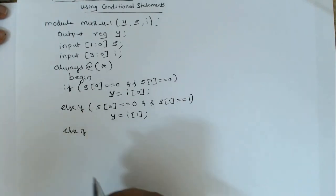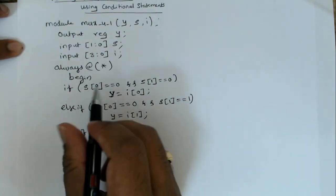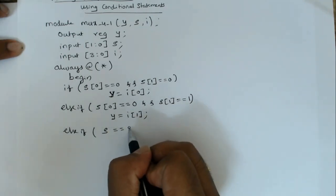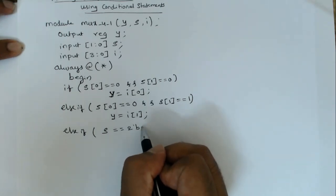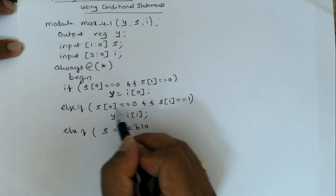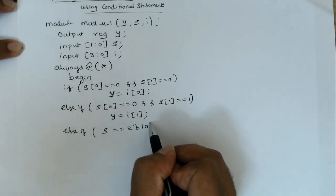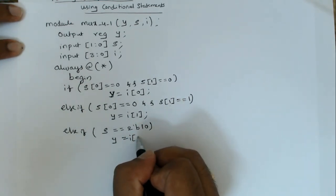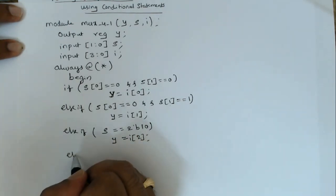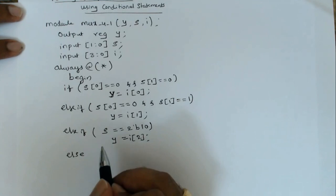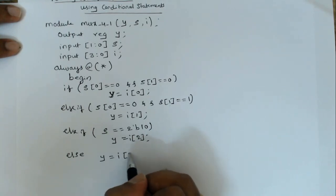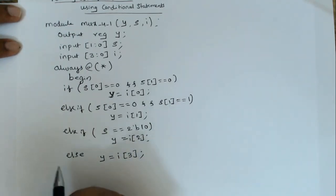There's another way to write the condition: since s is a 2-bit value, you can write else if s equals 2'b10, meaning s[0] is 1 and s[1] is 0, then y is assigned i[2]. Finally, else — if none of the previous three cases have occurred — y is by default assigned i[3]. This is how the code is written.